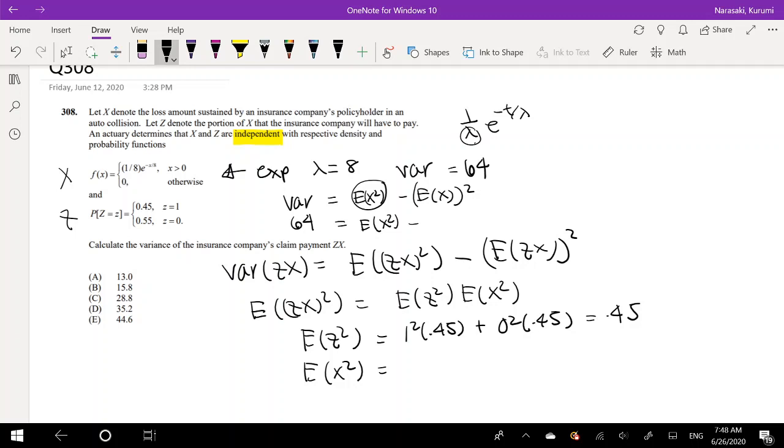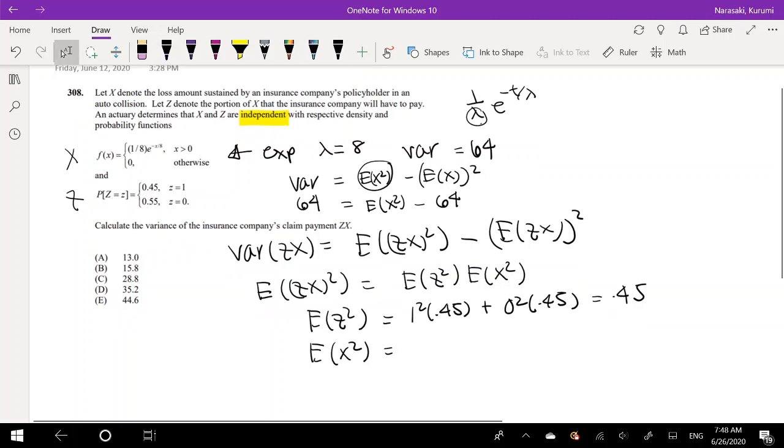Minus the mean squared, so that's 8 times 8, which is 64. Adding it to the other side, the expected value equals 64 plus 64, which equals 128.